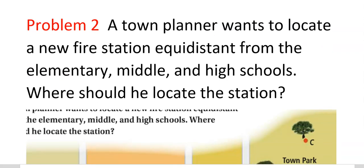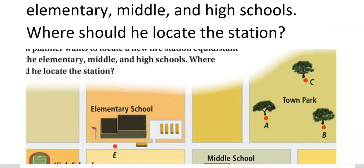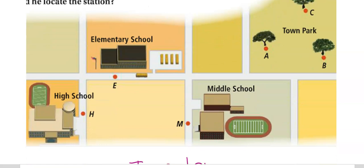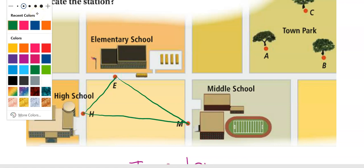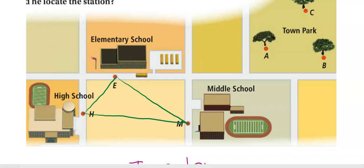A town planner wants to locate a new fire station equidistant from the elementary, middle, and high schools. Where should he locate the station? First of all, we're going to connect these. And of course, you guys should use a ruler. It kind of looks like this angle right here is a right angle. What you would do is you would construct the perpendicular bisectors of the sides. Now I'm going to put dotted lines in here where I think they should go. If it's a right angle, it should be somewhere on HM. So basically, you're going to say construct the perpendicular bisectors of HE and EM, where they cross would be the circumcenter.